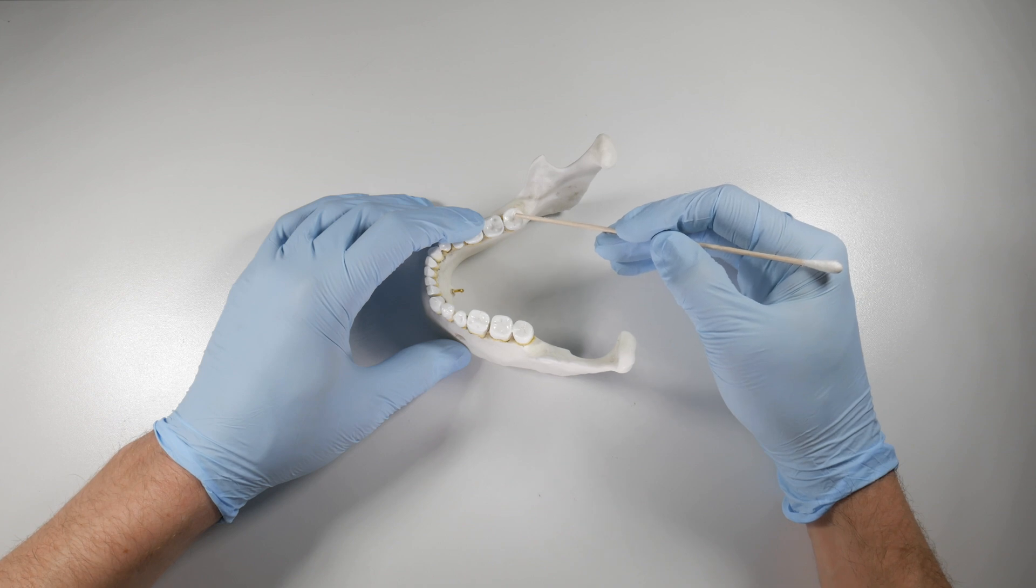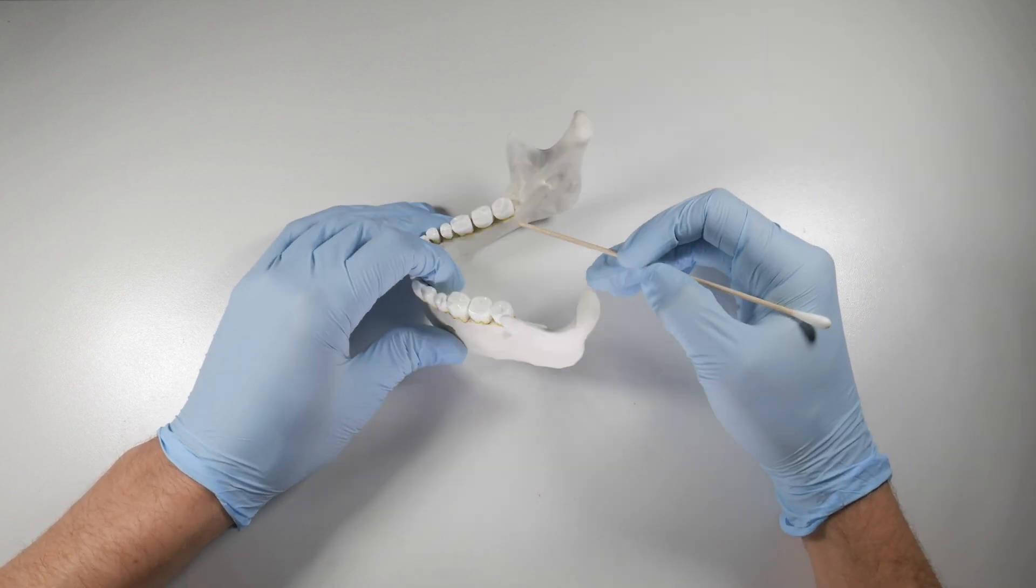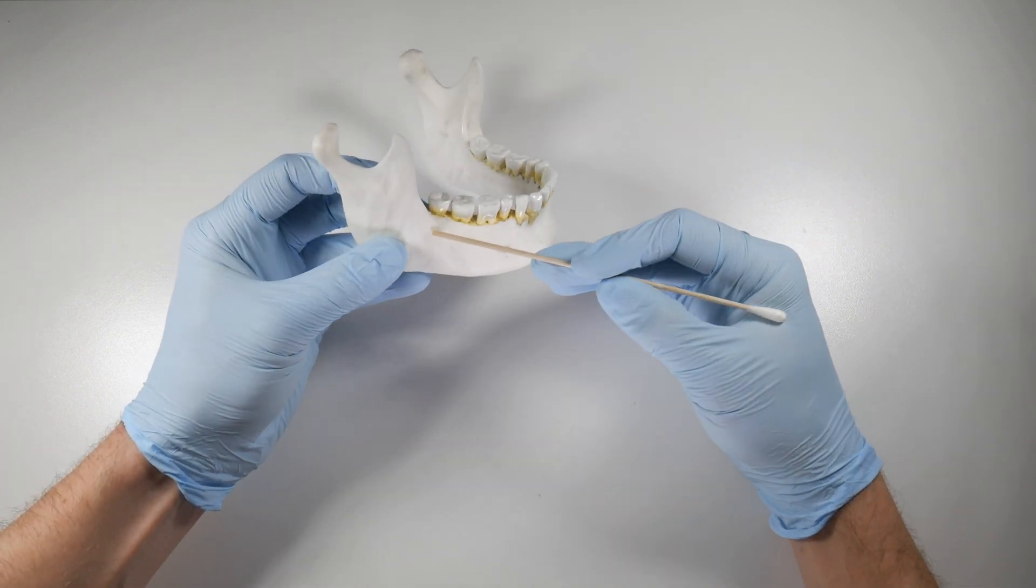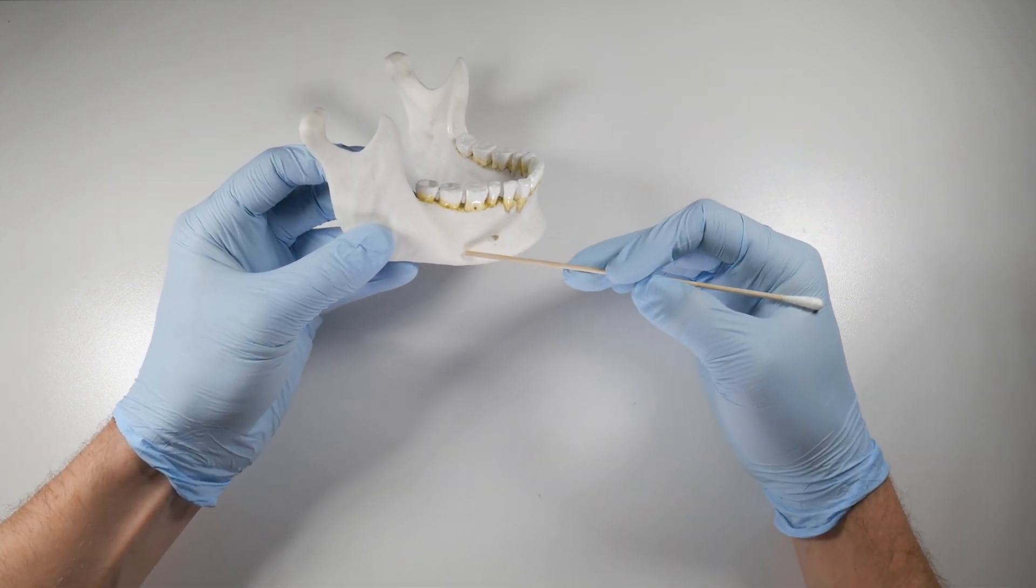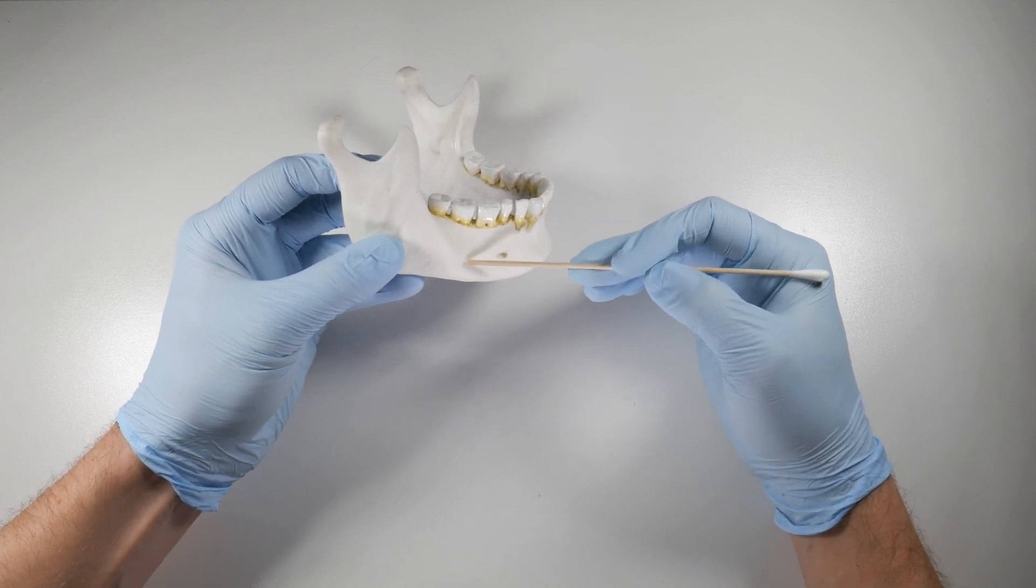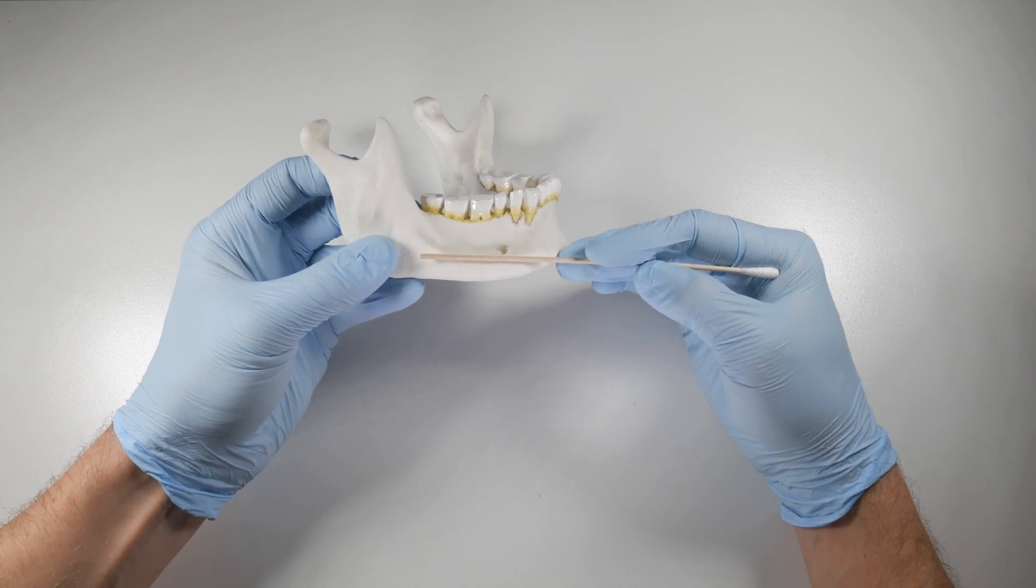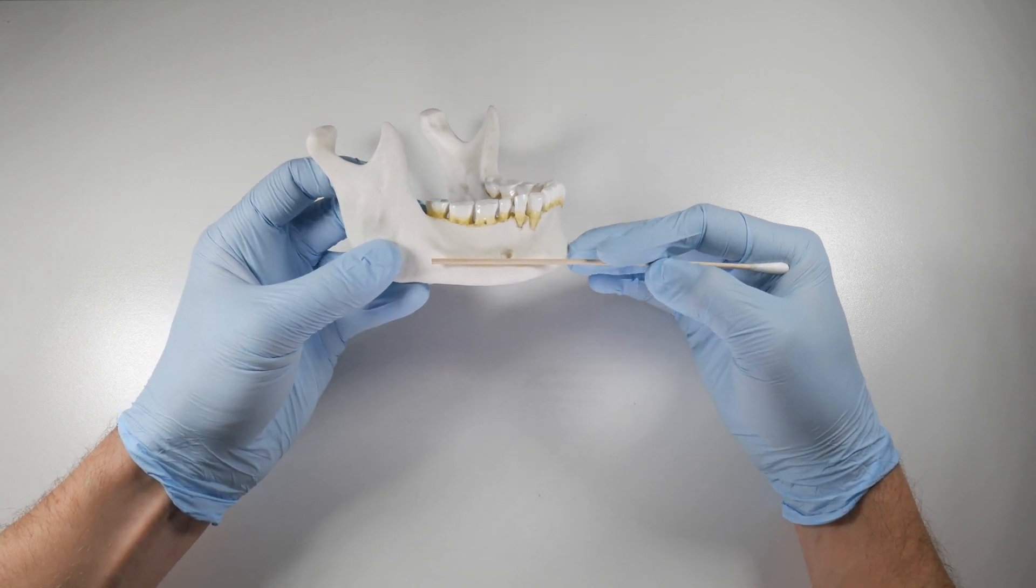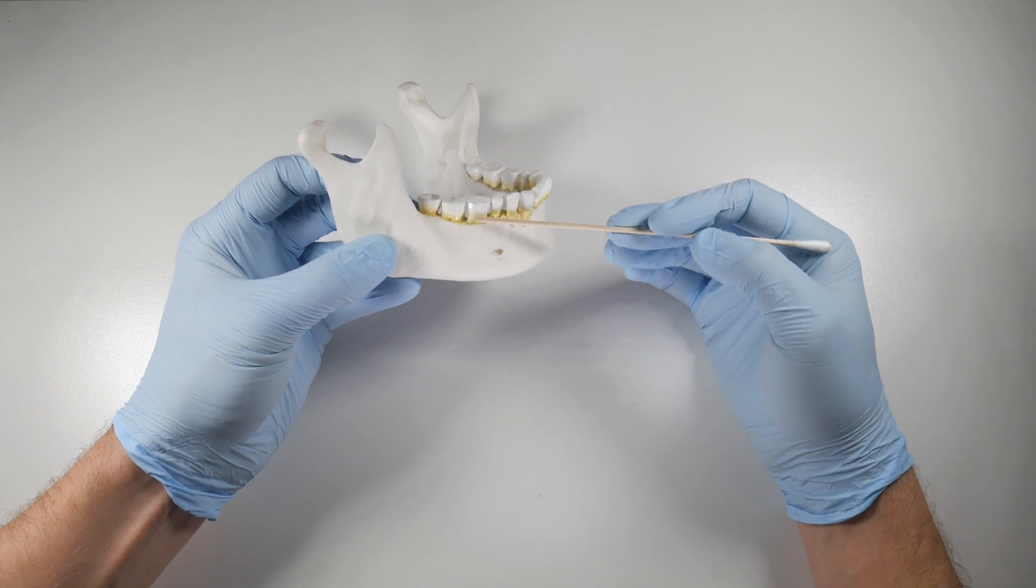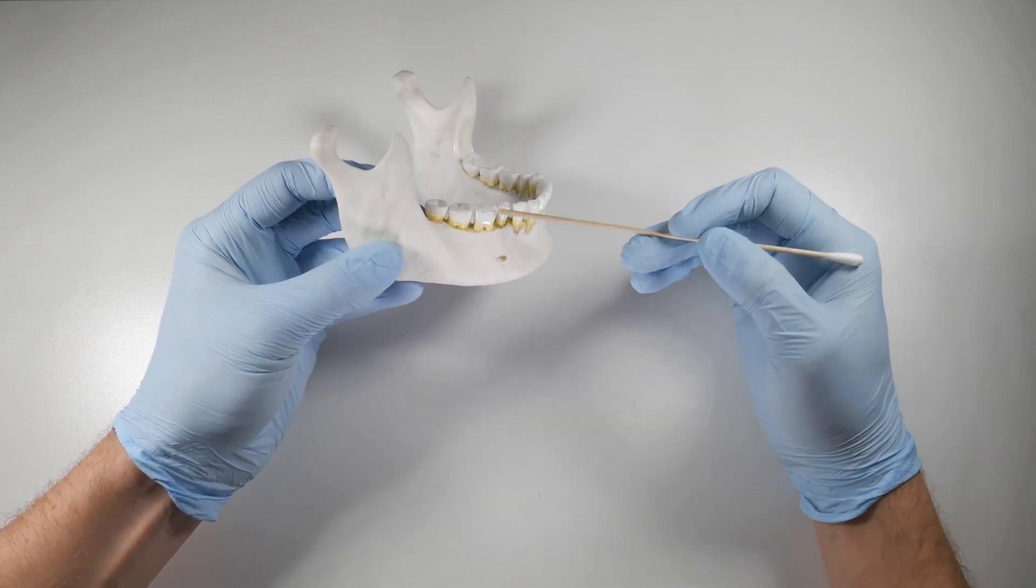As we continue forwards, the nerve often begins to drop fairly sharply beyond the apices of the molar teeth. So when you get to the second molar and first molar, typically the nerve is lying beneath the apices. However, it is very important to know where this nerve is when we're extracting these teeth, because sometimes extractions don't go as smoothly as we planned.